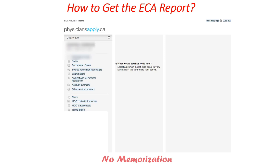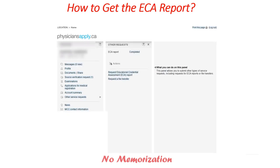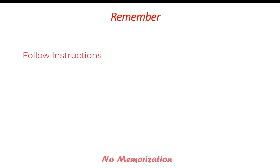The verification takes a few weeks. After that, you can ask for an ECR report. For that, you have to go to the home page and click other service request. It will show request educational credential assessment report — click this and proceed further. You have to pay again and you will get this ECR report through mail from the MCC. Please follow the instructions carefully and do it properly, because if there is any mistake, it will delay the process and it will also cost you more. Send all those documents through mail to the MCC.